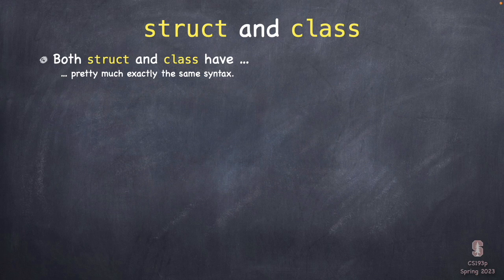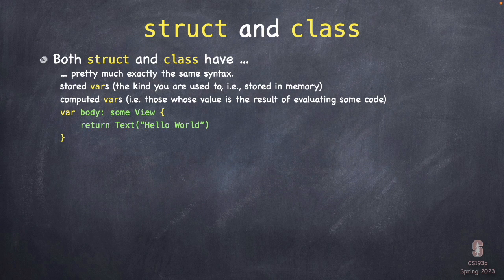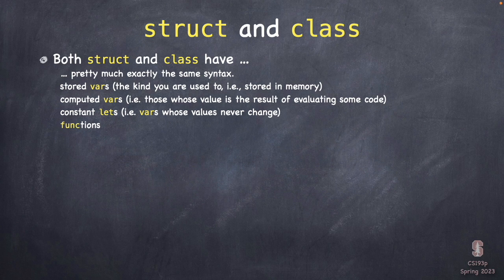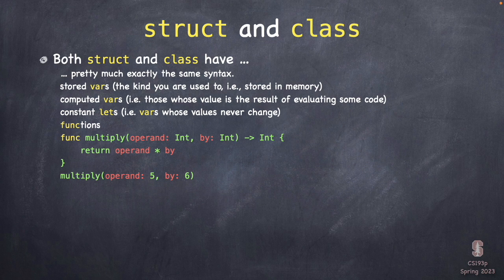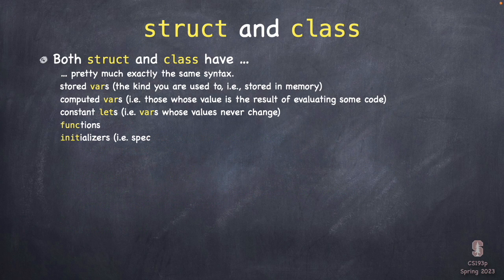Struct and class are very similar, so I'll compare them. They have almost exactly the same syntax. Both have stored vars like isFaceUp, computed vars like var body, constant lets, and functions. In functions, parameters can have two names — an external name (blue) and an internal name (purple). Callers use the external name; you use the internal name inside. Both structs and classes have all these things.